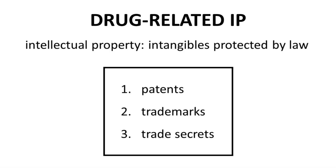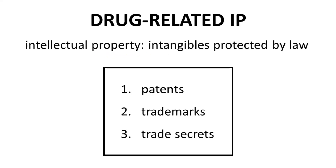Intellectual property, or IP, consists of intangibles — ideas or creations of the human mind that have legal protections as a type of property. The three types of intellectual property most often associated with the pharmaceutical industry are patents, trademarks, and trade secrets. Let's work through all three of these and explain how they are different from one another.